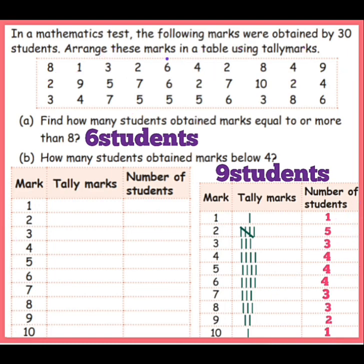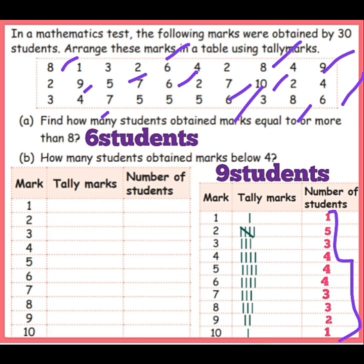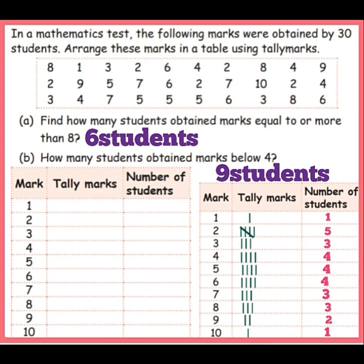Next 6 mark: 1, 2, 3, 4. Next 7: 1, 2, 3. For 8: 1, 2, 3. Next 9: 1, 2. For 10: only 1. So this way the number of students is written. Afterwards we draw the tally marks. For 1 mark only one stick. For 5: four lines with one cross line. 3 means 3 sticks, 4 means 4 sticks, again 4 means 4 sticks, 3 means 3 sticks, again 3 means 3 sticks, 2 means 2 sticks, last mark only 1 student. Tally mark and number of students are written.